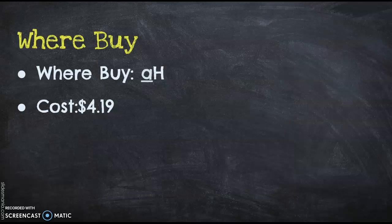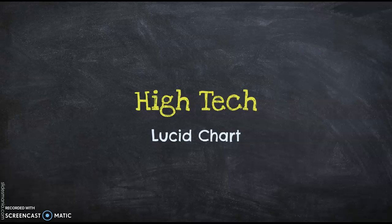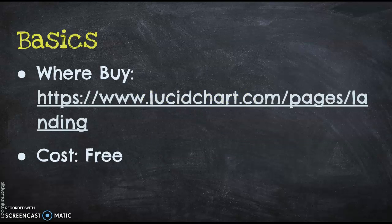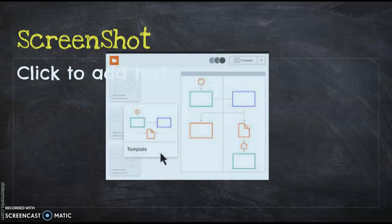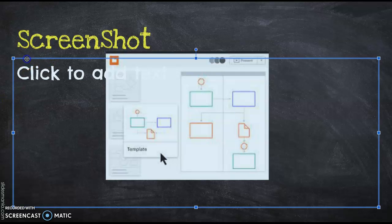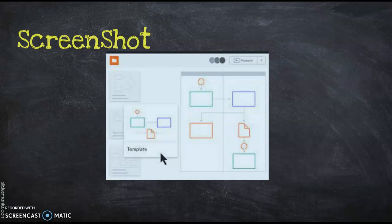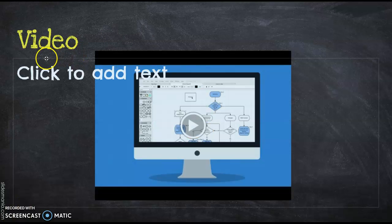You could buy it at Amazon. The cost is four dollars and nineteen cents. A second type of high-tech is Lucid Chart. Lucid Charts can be bought at lucidchart.com. Cost of it is free. It's a remote electronic whiteboard to be used for collaboration. Here's a screenshot of it, there's a video tutorial of it.